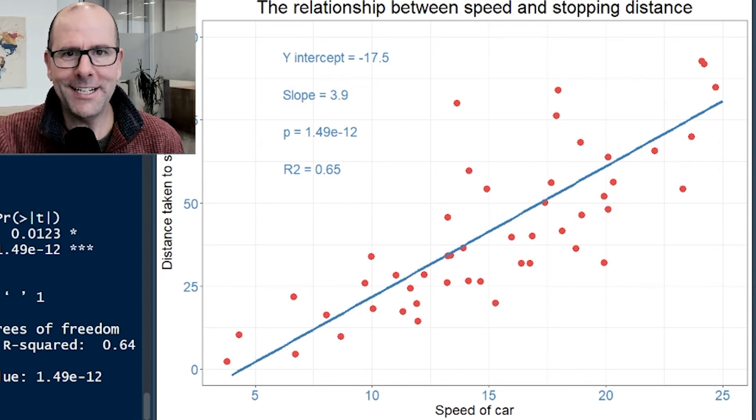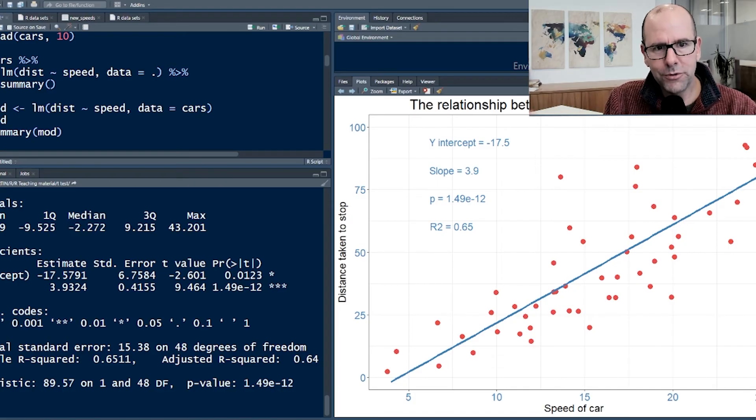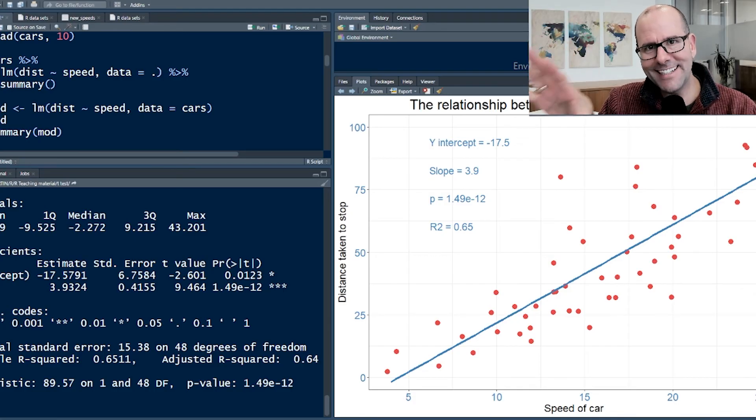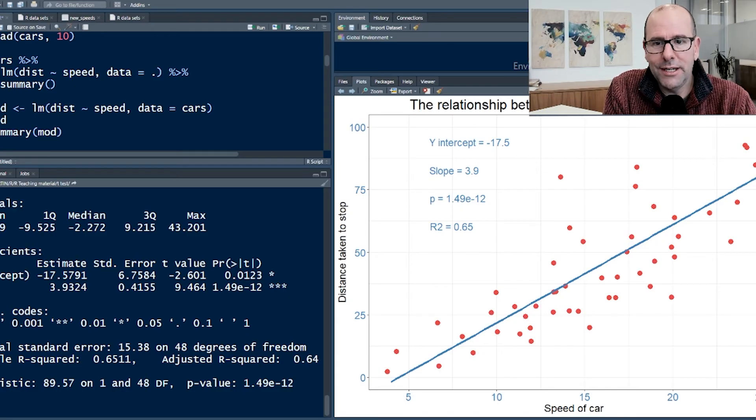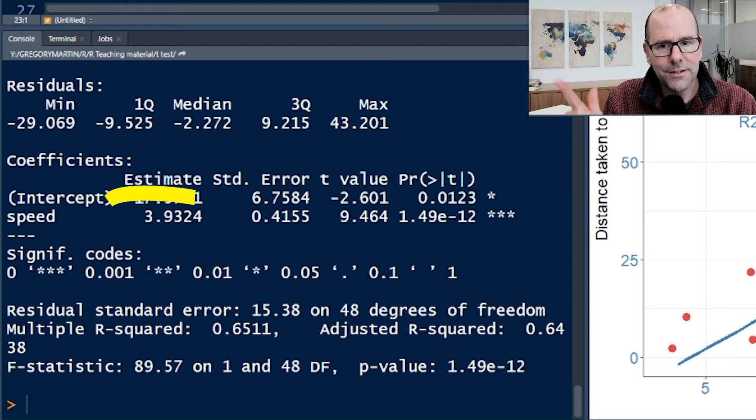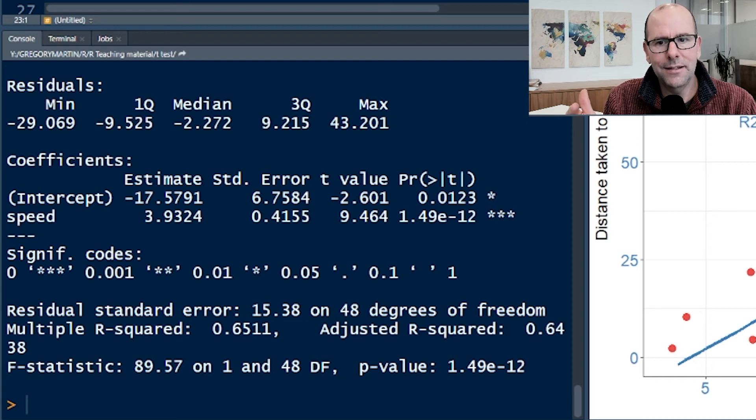Running the model in any software is easy - just a line of code in R, or a click of a button in other software. Interpreting the results can be tricky because it gives you so much. The place to start is just these four numbers: the y-intercept, usually meaningless, so you can ignore it; the slope; the p-value associated with that slope, to know it's statistically significant; and then the R-squared, which tells us how much of the change in y can be explained by a change in x.